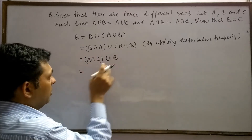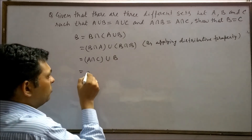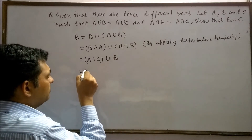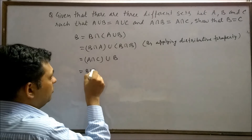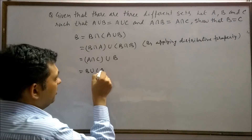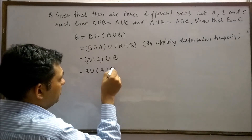Now, by applying the commutative property, this becomes B union A intersection C.